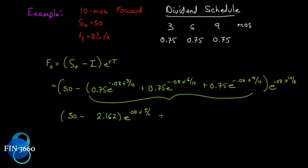$50 minus that amount will grow at e^(0.08×10/12). We'll get $51.14. So that's the futures price today for this particular investment asset. If the spot price is $50, we would pay $51.14 today for it, and that would leave no arbitrage opportunities.